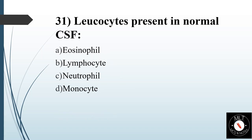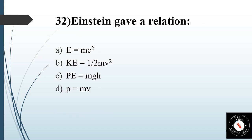Thirty-first question. Leukocytes present in normal CSF. Option A: Eosinophil. Option B: Lymphocyte. Option C: Neutrophil. Option D: Monocyte. Answer is Option B: Lymphocyte.